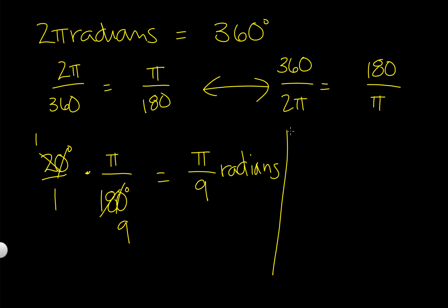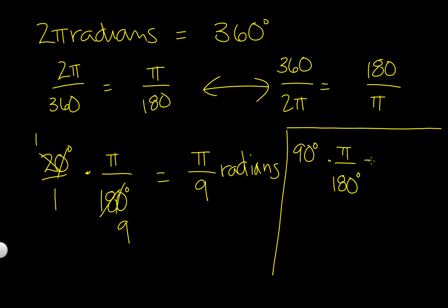We're going to look at quadrants. We're going to first look at quadrantal angles. So let's do this again with 90 degrees. So 90 degrees times my conversion factor of π over 180 — the degrees go, the zeros go, and the 9 and the 18 become π over 2.